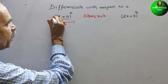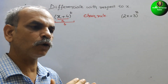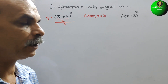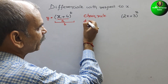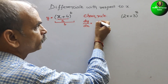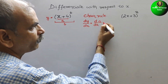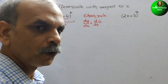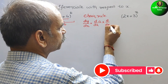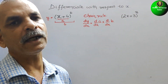Suppose we have taken this as y. y is equal to x plus 4 to the power of 6. So dy by dx is equal to d by dx of a, and first comes your a into d by dx of b. Like that we will do it.